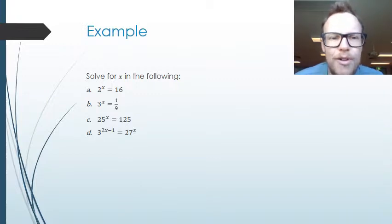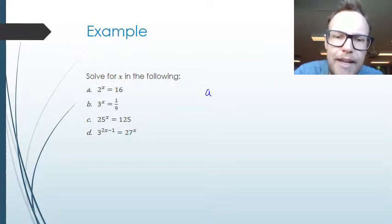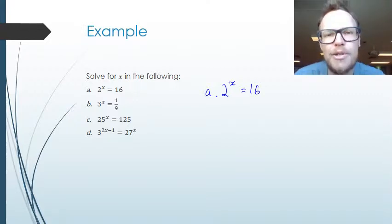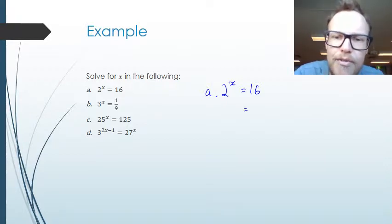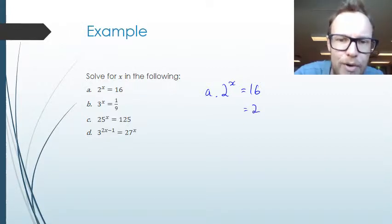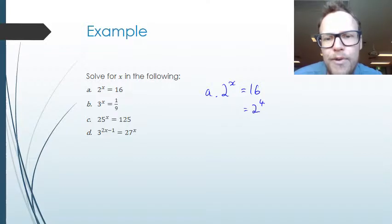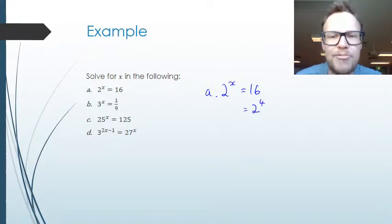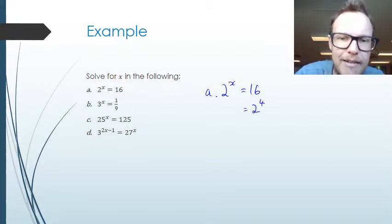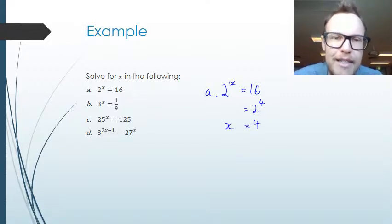Let's look at some examples, solving for x. The first example: 2 to the power of x equals 16. We need to express both sides with the same base. Since 16 is 2 times 2 times 2 times 2, that's the same as 2 to the power of 4. Now we can equate the exponents and we get x equals 4.